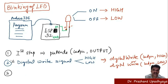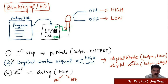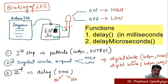The third step is to use a delay function. This defines how long the LED should remain on or off. The time can be specified in microseconds or milliseconds, depending on the functionality you want to use.